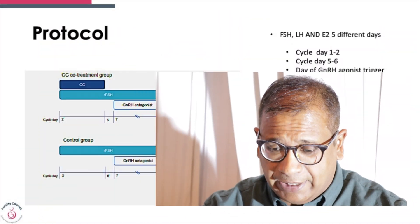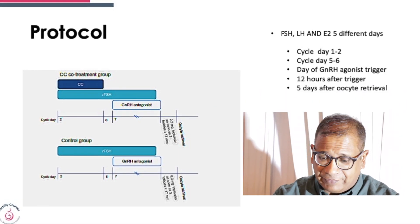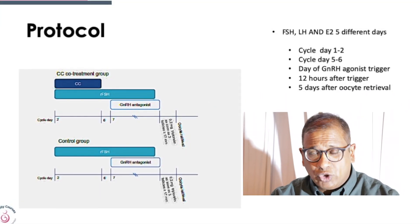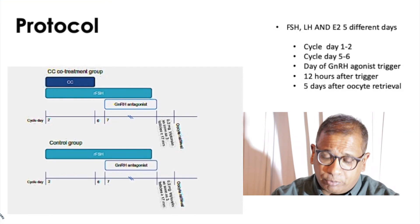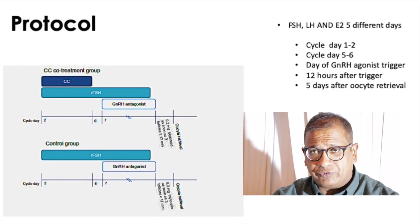If you look at the protocol, there's one protocol where you use clomiphene and then the antagonist from day 7 onwards, and the other one used only recombinant FSH as a control with the antagonist — both had the agonist trigger. Bloods were taken on cycle day 1 and 2, cycle day 5 and 6, the day of the agonist trigger, 12 hours after trigger, and 5 days after oocyte retrieval. When you look at the hormonal profile, the FSH concentrations were comparable.